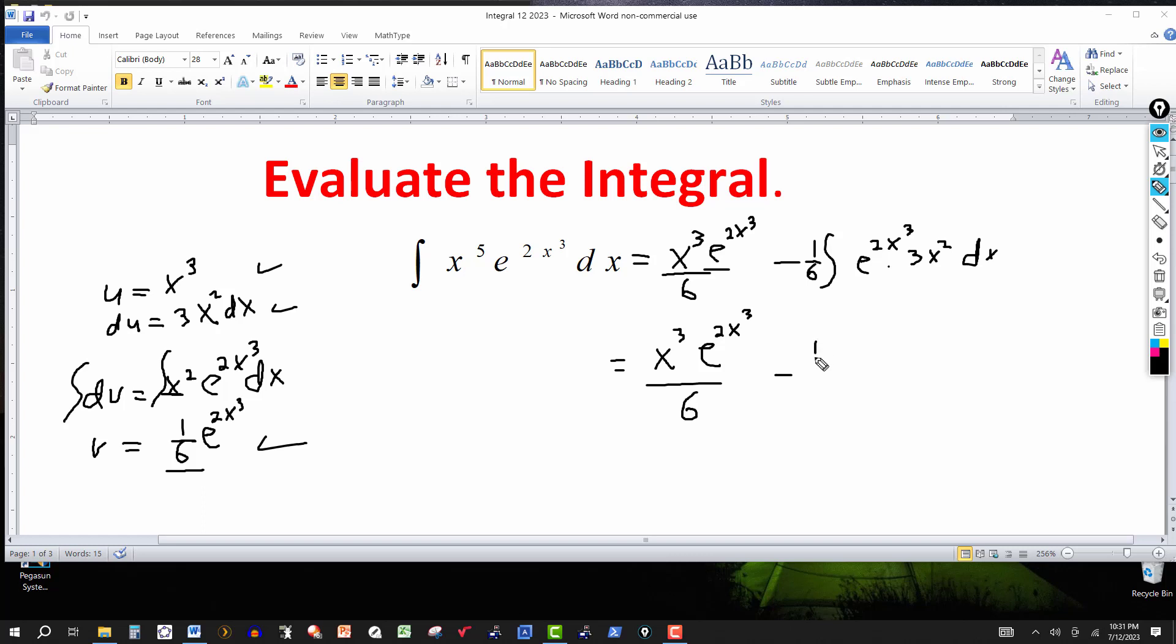This is a minus 1/6. And then in here, if I let the u equal 2x to the third, the derivative would be 6x squared. So that would give me a factor of 6. So this would give me 3 over 6. That would be 1 half here. And the integral then of that would be e to the 2x cubed.